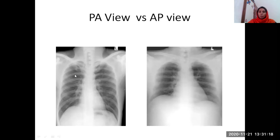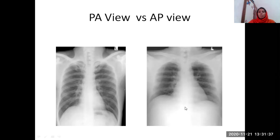Another difference is about the ribs. In a posteroanterior view, the ribs are slightly curved, whereas in an AP view the ribs are almost flat. Never ever comment about cardiac shadow or cardiac size on an AP view, because in an AP view the cardiac size may appear bigger. So don't comment upon cardiac enlargement using an AP view.